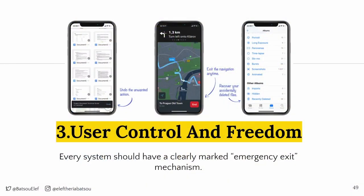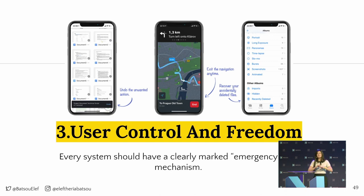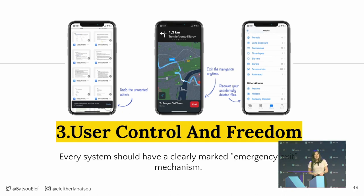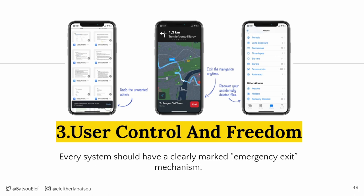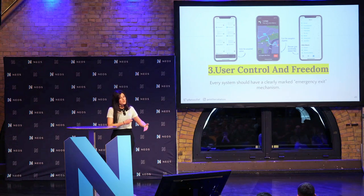The third rule is user control and freedom. Every system should have a clearly marked emergency exit. Either we want it or not, our users will make mistakes. We shouldn't blame them or think we have the perfect product. Give them an exit button, an undo button, a delete and recovery button. Always give them the freedom to go back or do something again. It's not hard to have an undo or back button — we just have to implement them, and the more we do, the happier our customers will be.